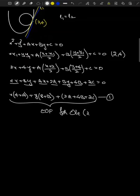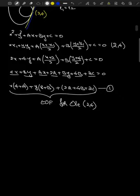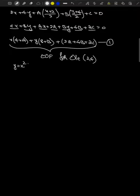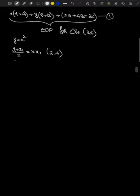Now for the equation of a tangent for the parabola y = x²: it can be written as (y + y₁)/2 = x·x₁. Substituting (2, 4): (y + 4)/2 = 2x, which gives 4x − y − 4 = 0. Let me take this as L2.